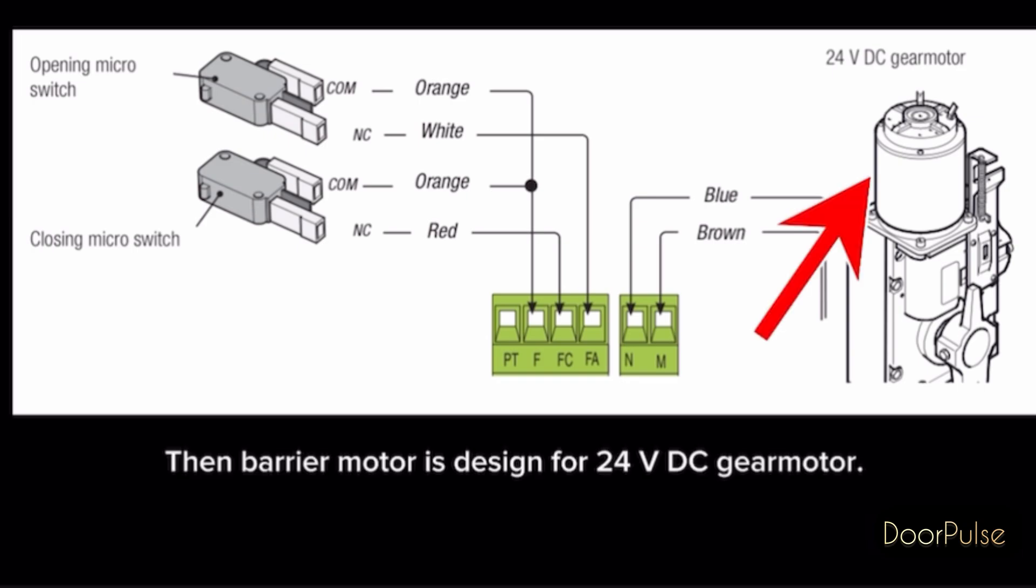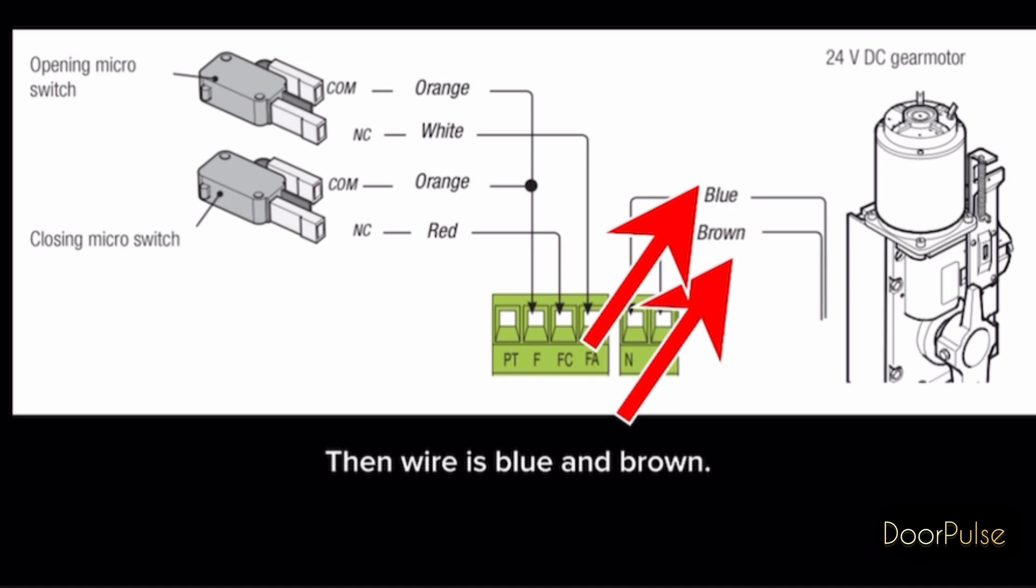The barrier motor is designed for 24V DC gear motor, the wire is blue and brown.